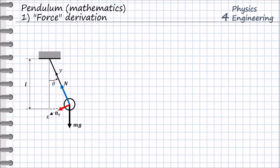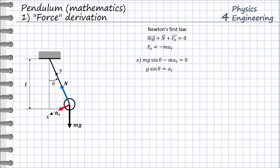We connect the coordinate system with the moving mass, then write Newton's first law with consideration of the non-inertial force acting on the mass. This is the force projection in the x direction. As a next step, we consider the definition of tangential acceleration. We note that the angular acceleration beta has a negative sign compared to the second derivative of the angular position of the pendulum, because the angular acceleration has a different direction than the angular position.